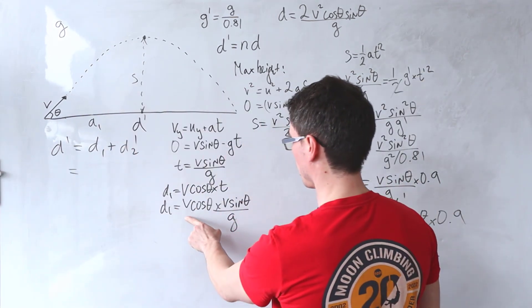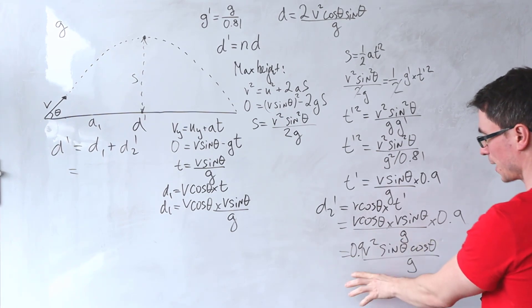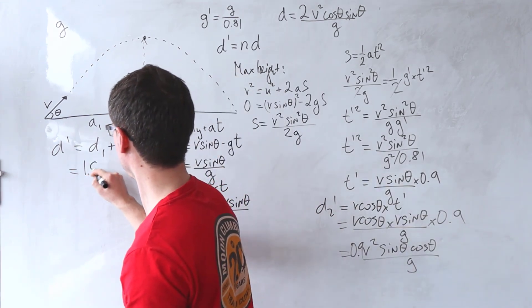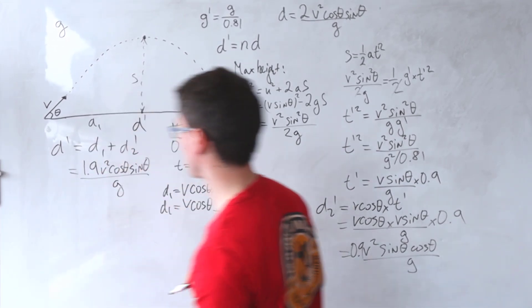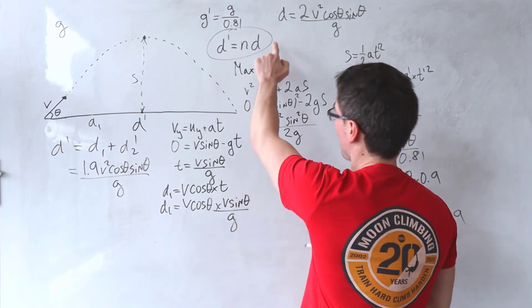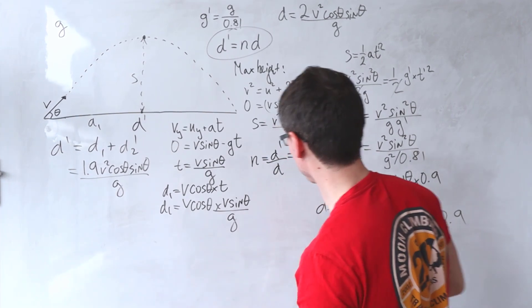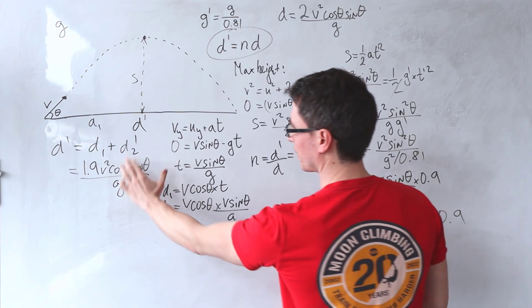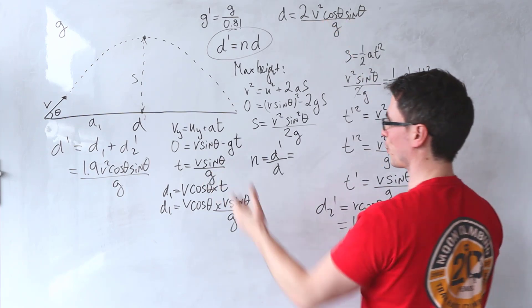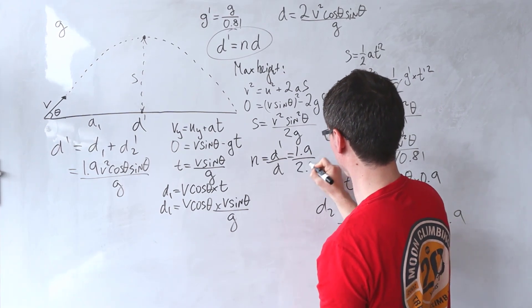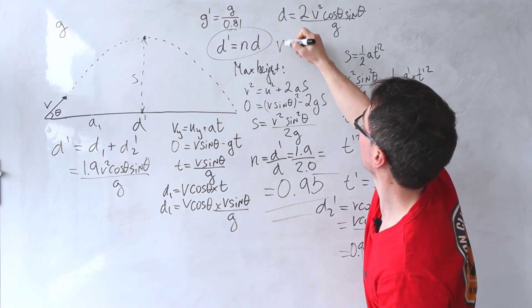Now I have everything needed to solve. d prime equals d1 plus d2 prime = v cos theta times v sine theta over g, plus 0.9 times the same expression. This gives 1.9 v² cos theta sine theta divided by g. Finally, n = d prime over d. The factor v² cos theta sine theta over g cancels, leaving n = 1.9 divided by 2, which equals 0.95. So n is 0.95.